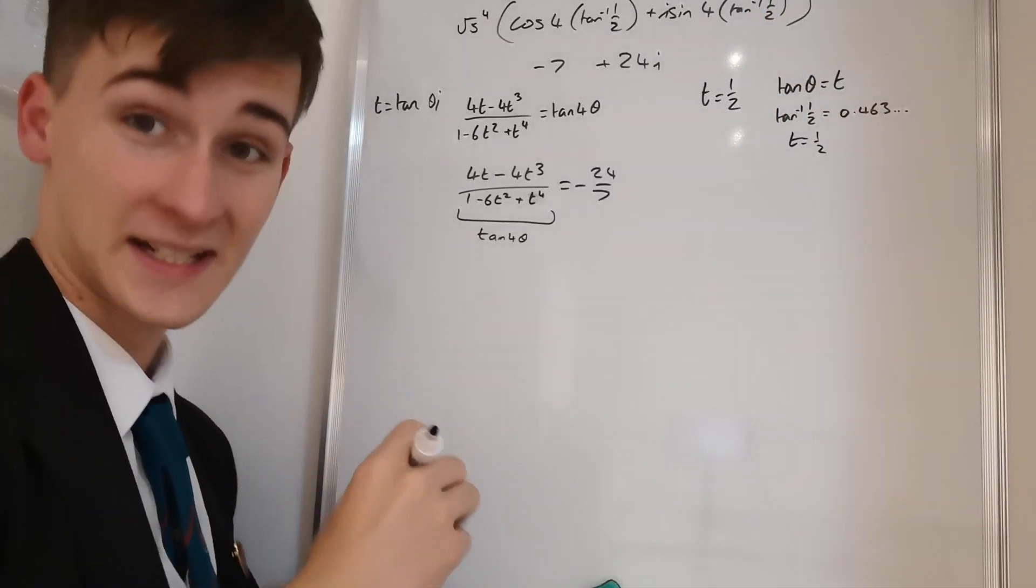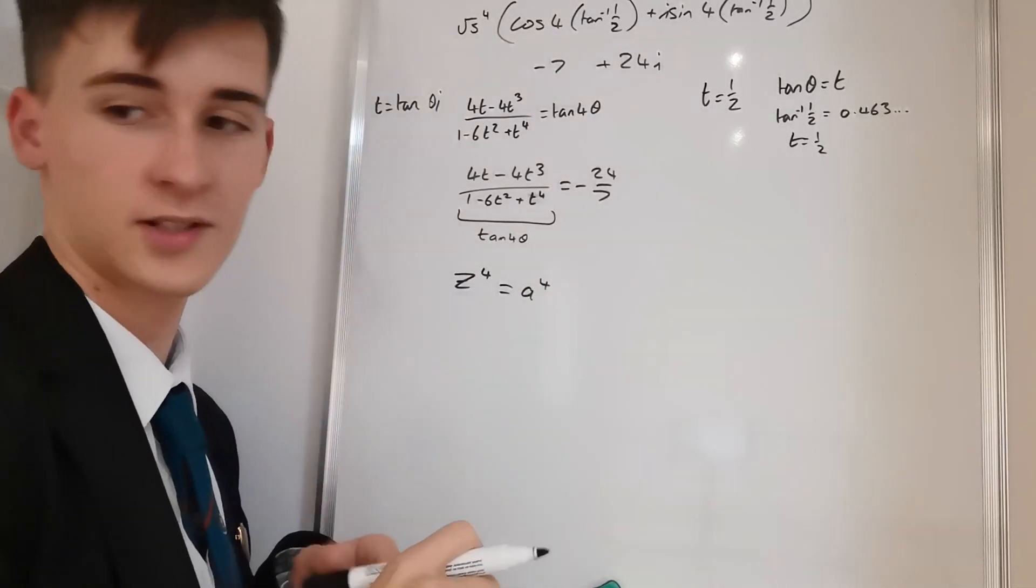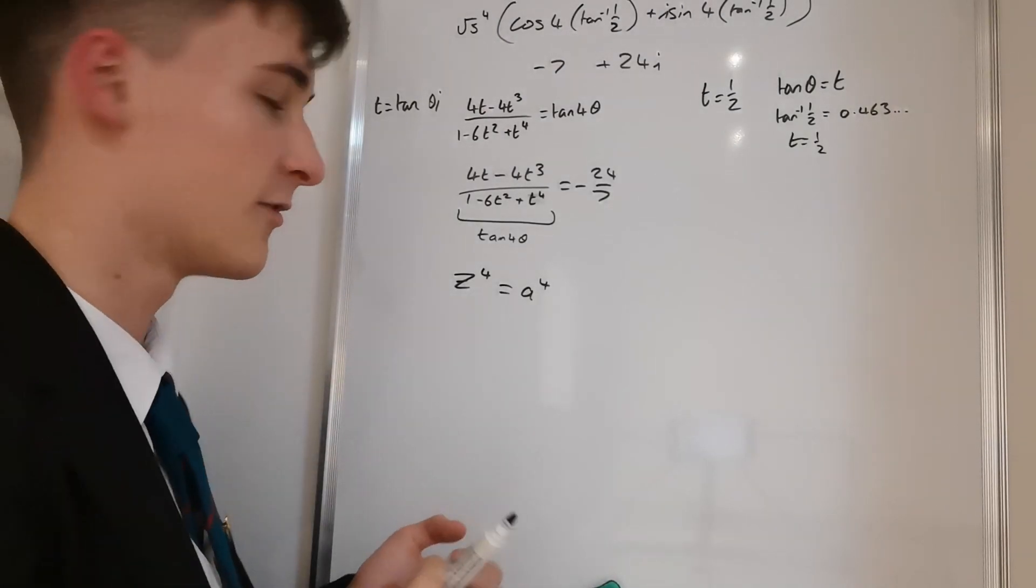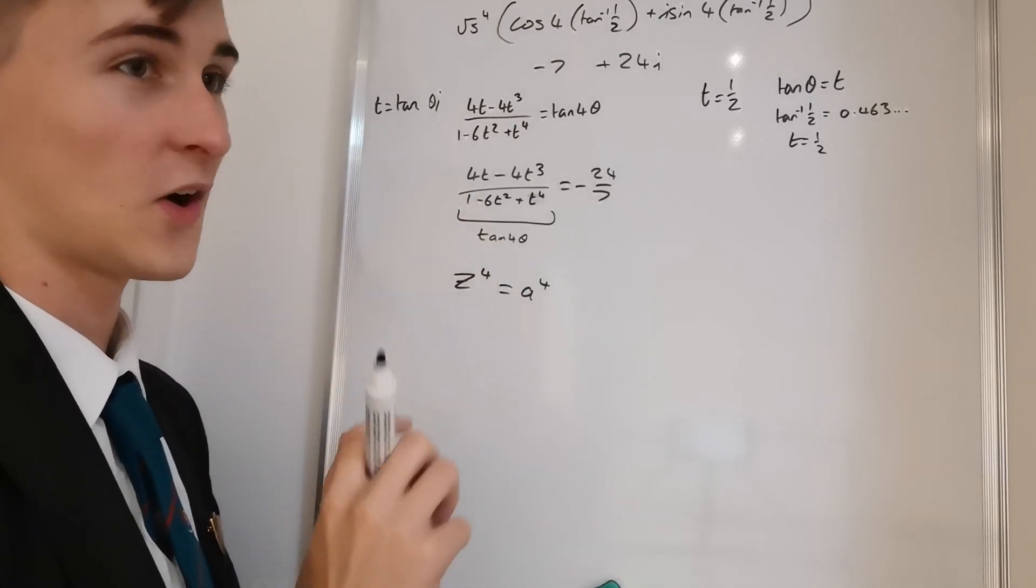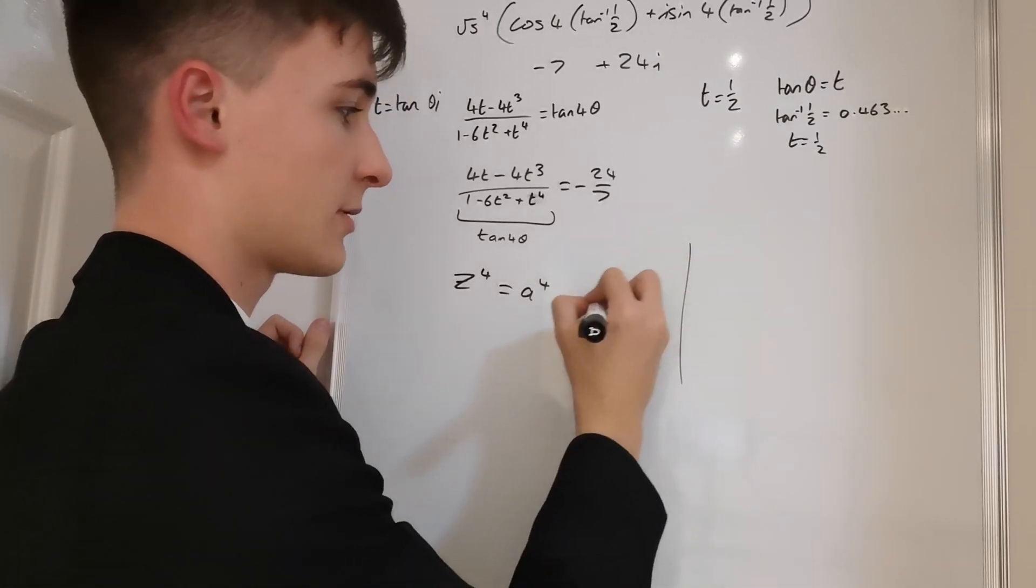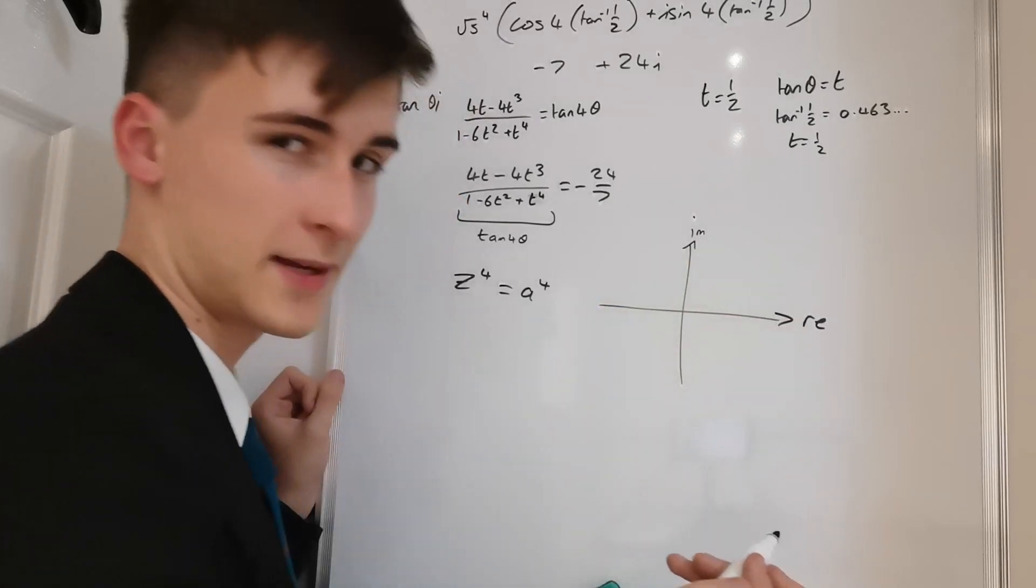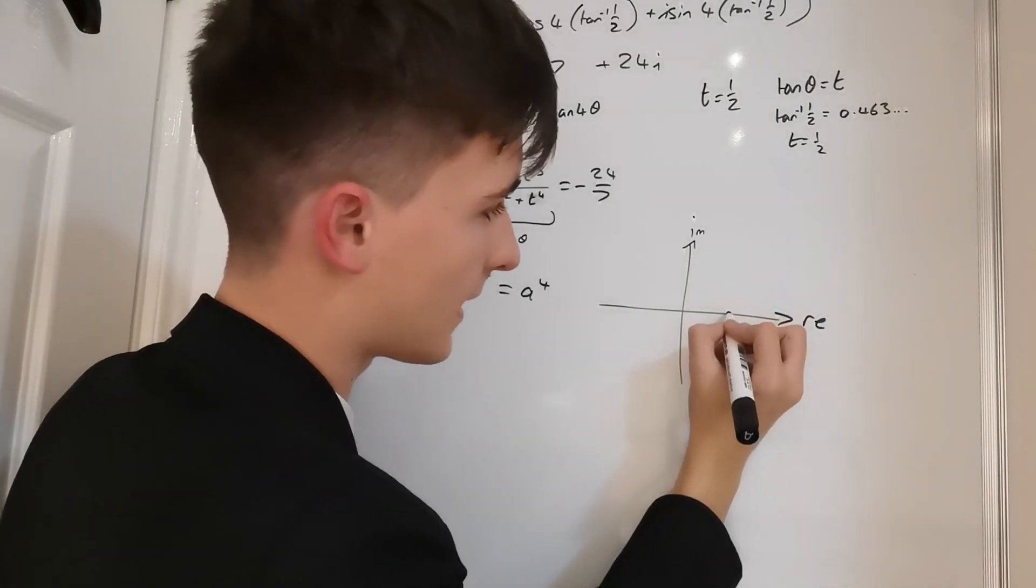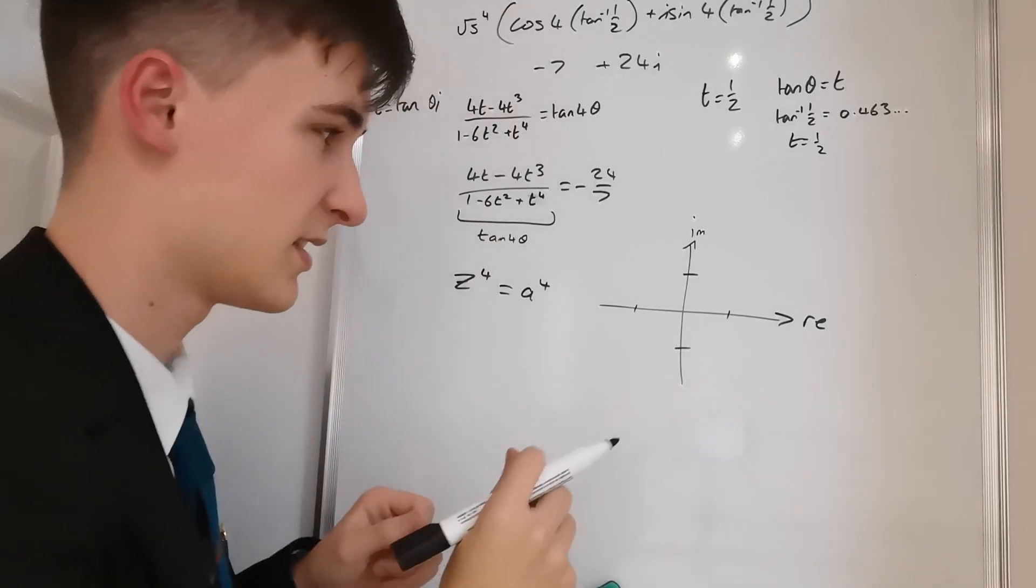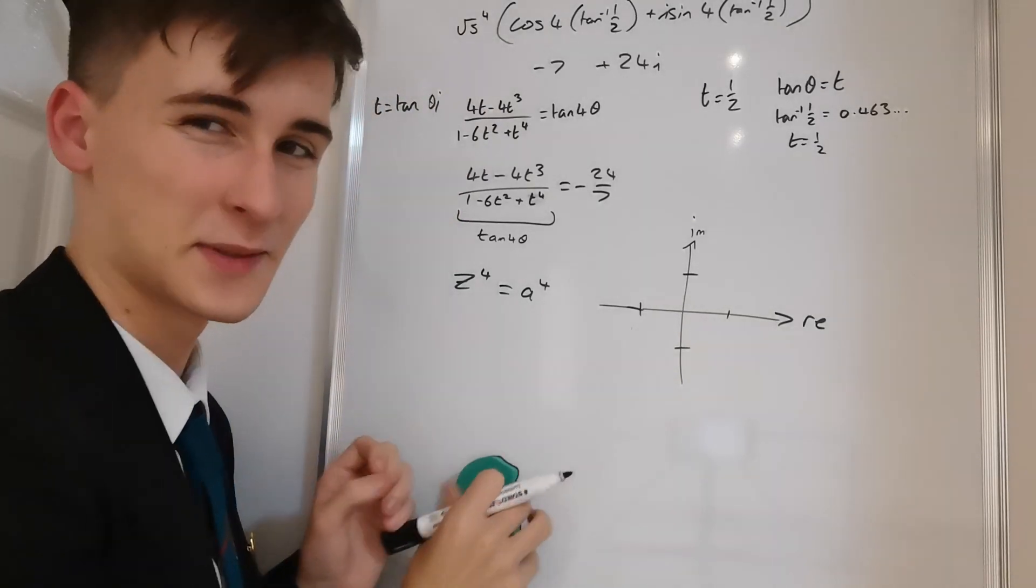Okay, so the next part of the question says, using the symmetry of z^4 = a^4, plot the four roots of this equation on the Argand diagram. So what are we going to do? We're going to draw out our Argand diagram. Now this is not going to be 100% accurate because I'm doing it by hand, but we're saying that... those are really not equal, are they? That's as equal as we can make it.